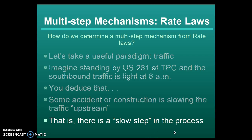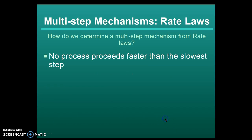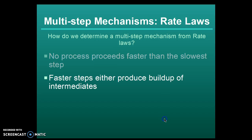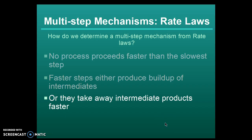That is, there is a slow step in the process that's preventing the usually high traffic flow we see at 8 a.m. going southbound. No process proceeds faster than the slowest step. Faster steps either produce a buildup of intermediates or they take away the intermediate products faster. The slow step is the rate determining step.